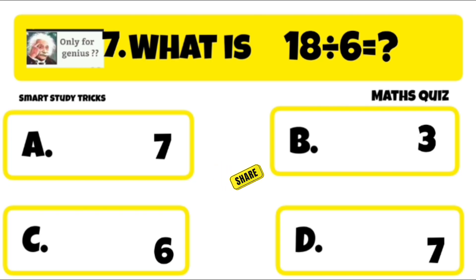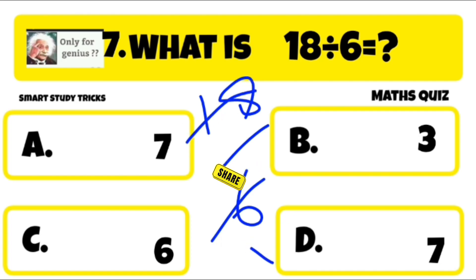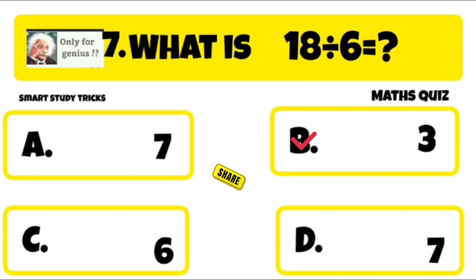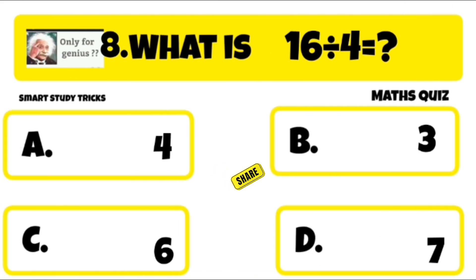Quiz number 7 is: what is 18 divided by 6? 18 divided by 6 is equal to 3. Right answer is B: 3.